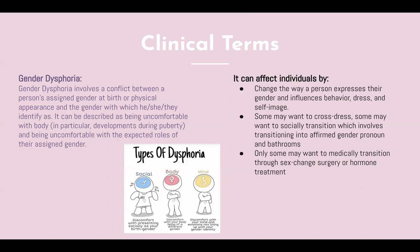Gender dysphoria involves a conflict between a person's assigned gender at birth or physical appearance and the gender with which they identify. It can be described as being uncomfortable with one's body, in particular the developments that happened during puberty, and being uncomfortable with the expected roles of their assigned gender. Gender dysphoria can affect the way a person expresses their gender and influence their behavior, dress, and self-image. Some may want to cross-dress, some may want to socially transition, which involves transitioning into affirmed gender pronouns and bathroom use.